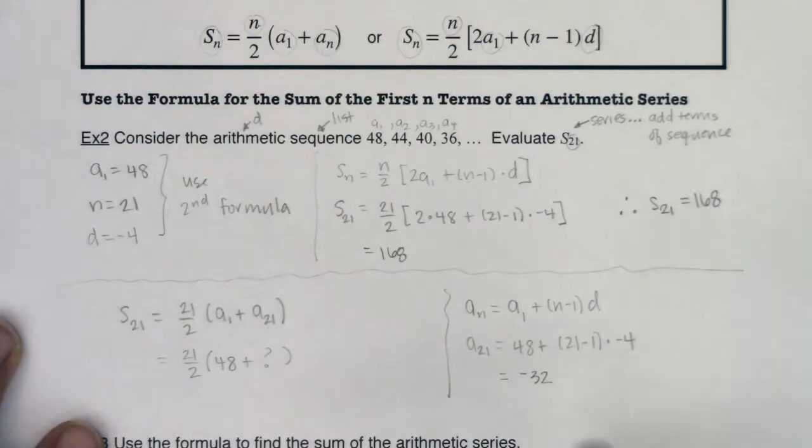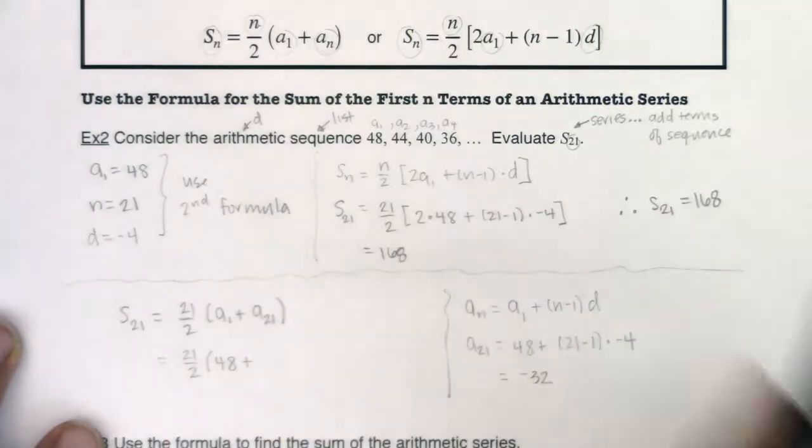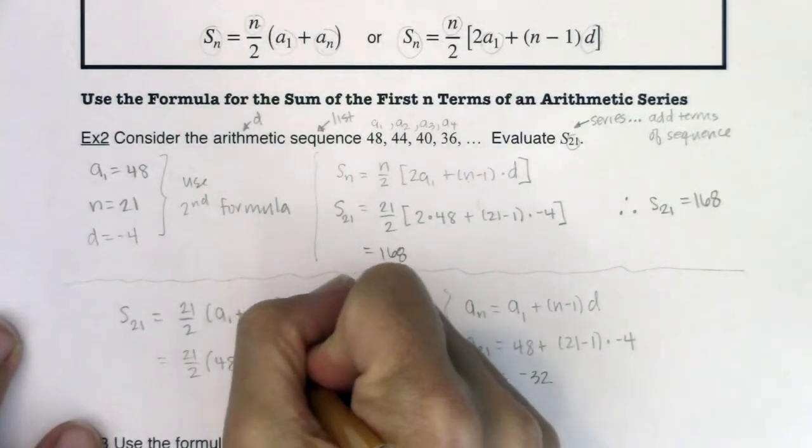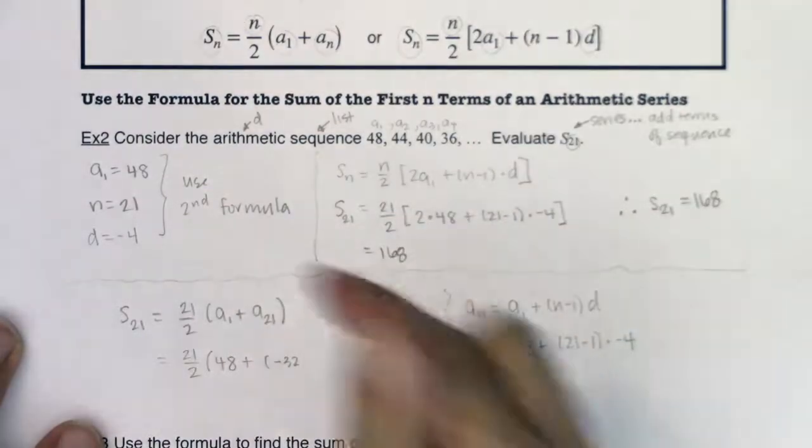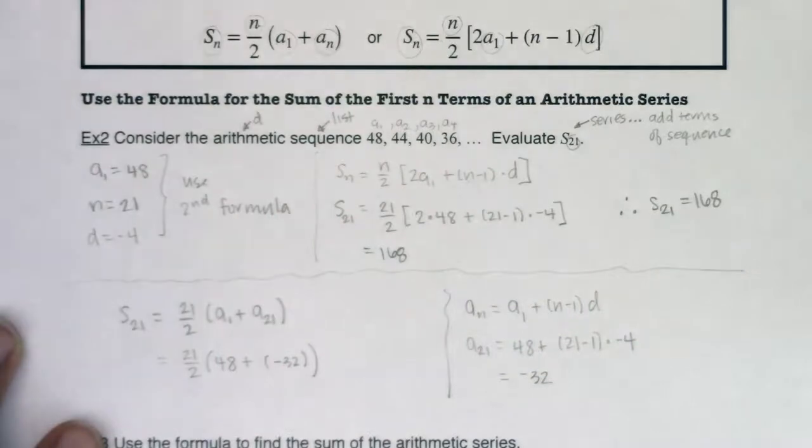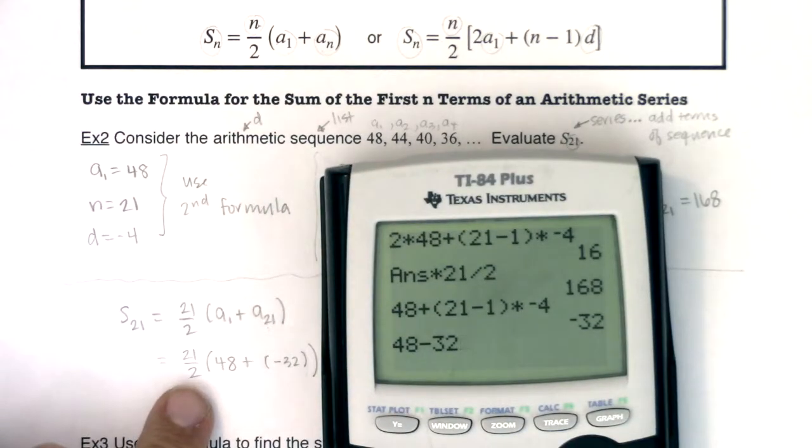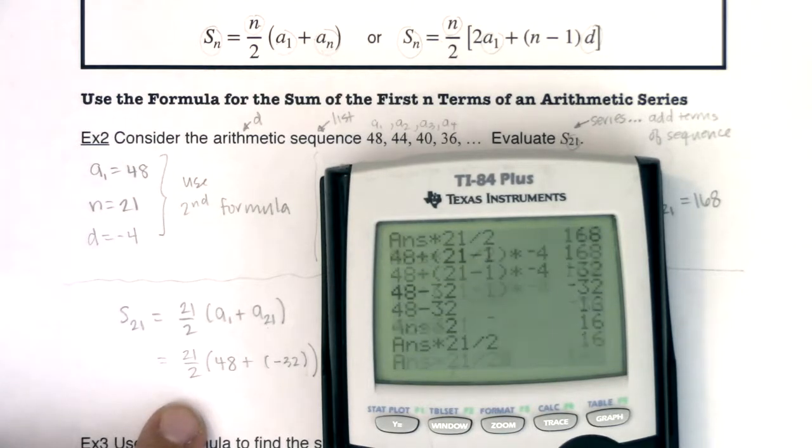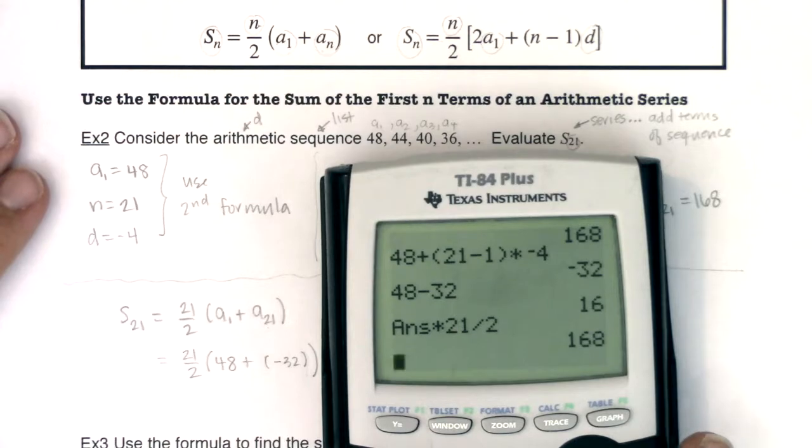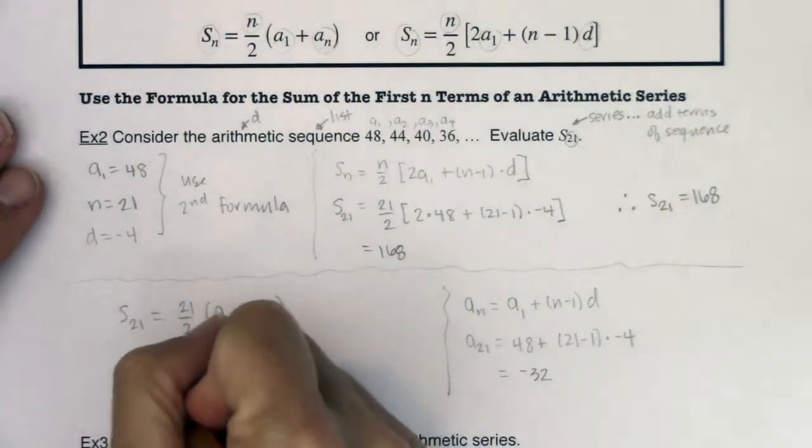Alright. So now I'm going to take that a₂₁ value and plug it in right here. And let's see what we're getting. It looks like inside my parentheses, I have 48 minus 32. So let me move that over. 48 minus 32. And then I need to multiply that by 21 halves. And what number am I getting? 168, which I should. I mean, that's what's awesome about math. It works. You get the same answer or you should get the same answer either way.